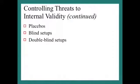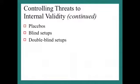Another way to control internal validity is by using a placebo effect. A placebo is when the control group receives a fake treatment, thinking they are getting a real treatment, while the experimental group gets the real treatment. We've heard of placebos — sugar pills, for example. Everybody thinks they're getting the same treatment, but one group really isn't.